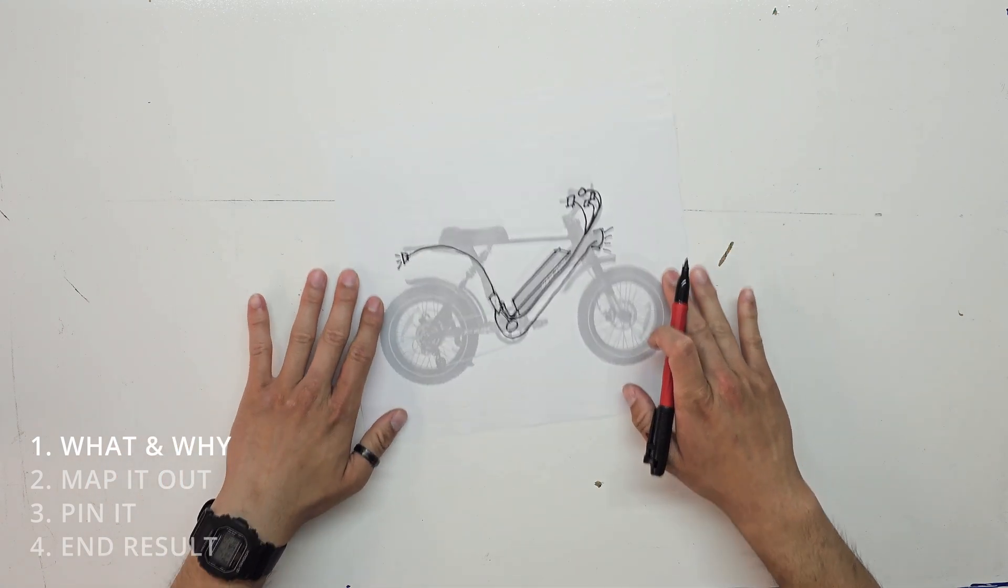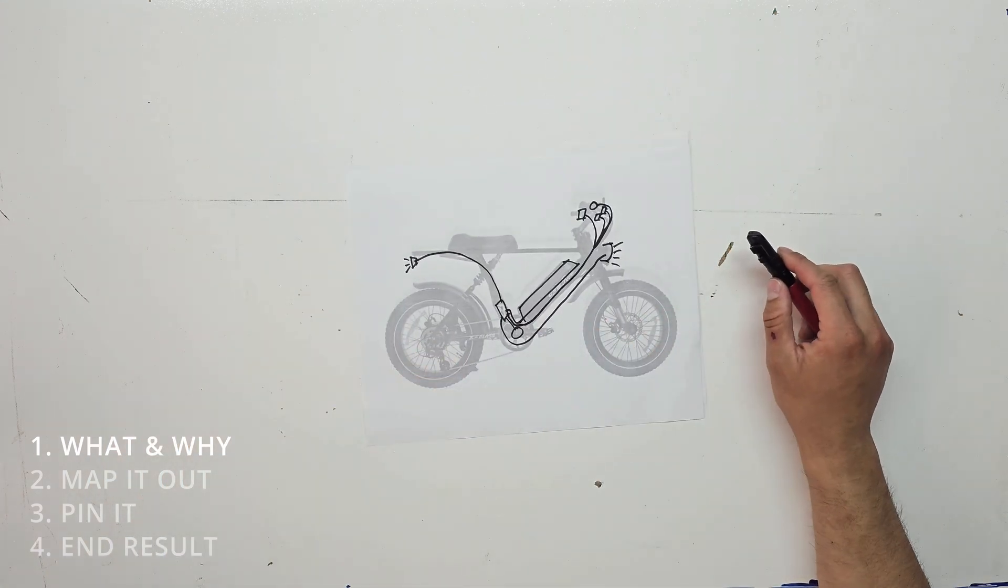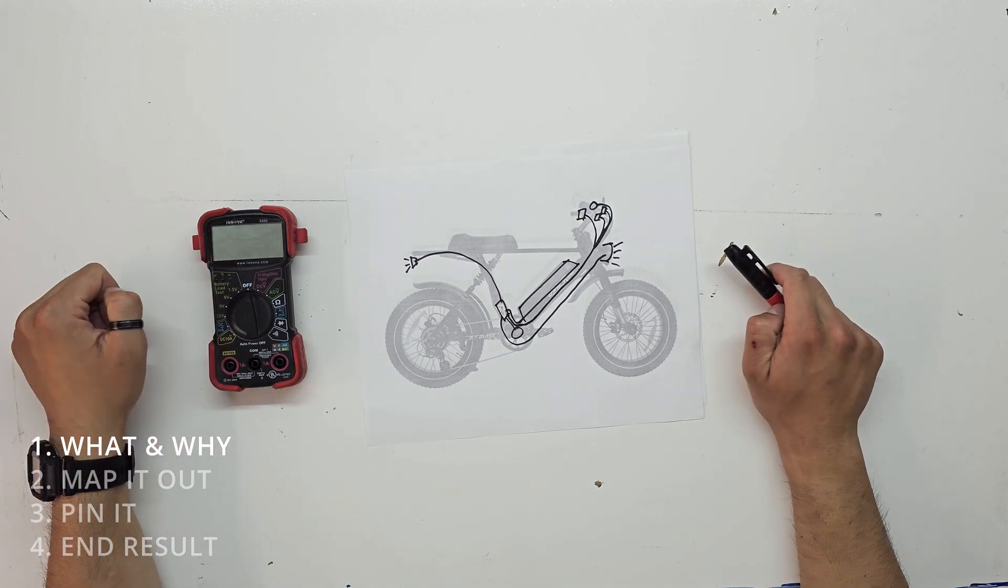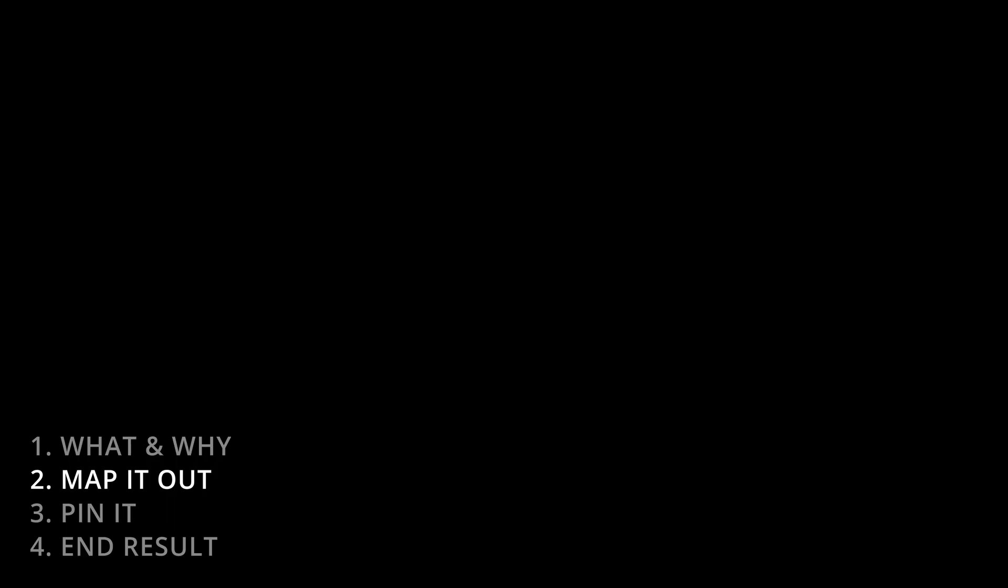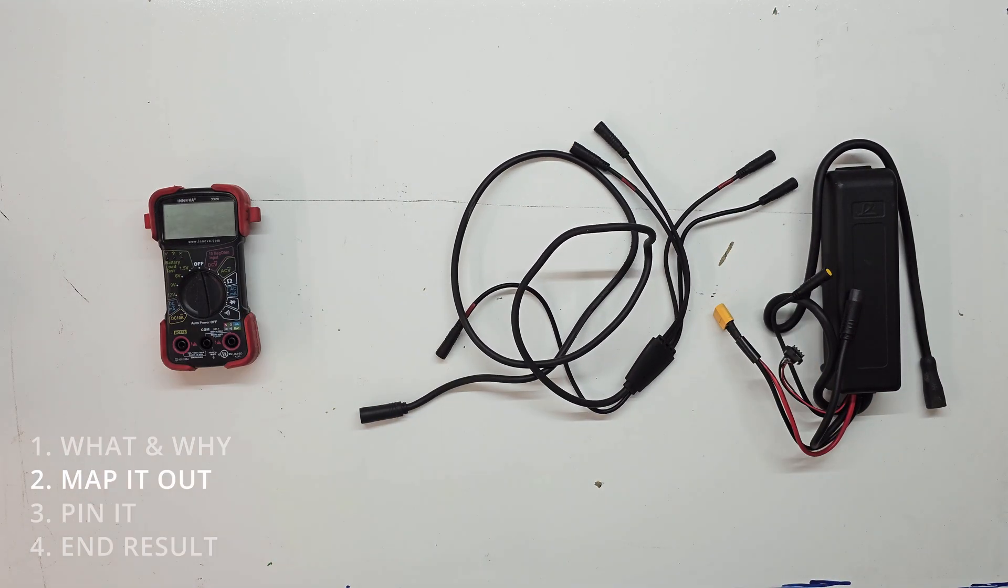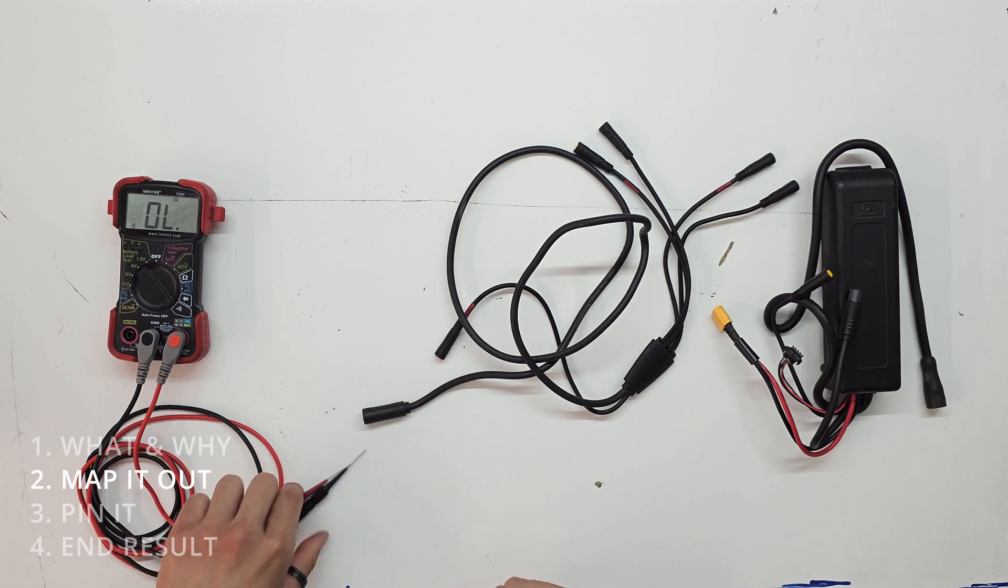Besides some bike tools and your controller, the only thing you really need is a multimeter and a little bit of cleverness. So you can do it on the bike, but we've removed the controller and the wire harness so we can do it on a flat surface. This just makes it a little easier.